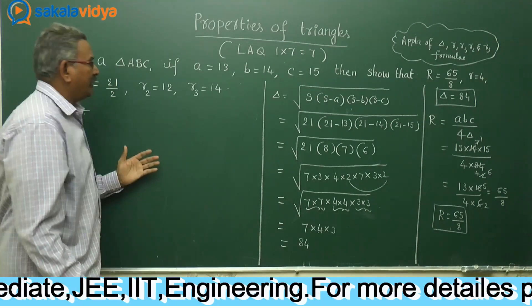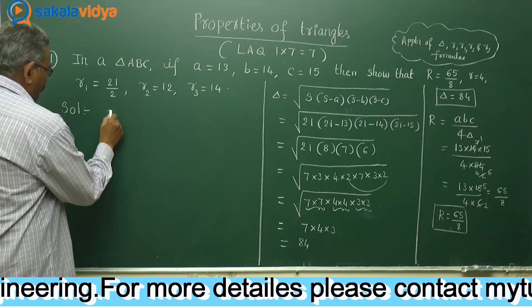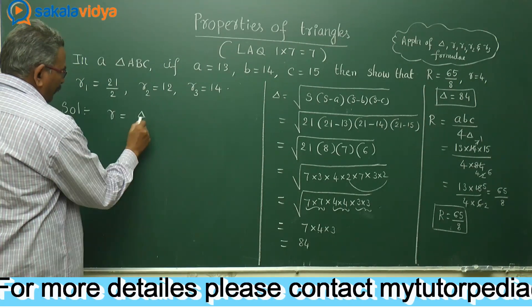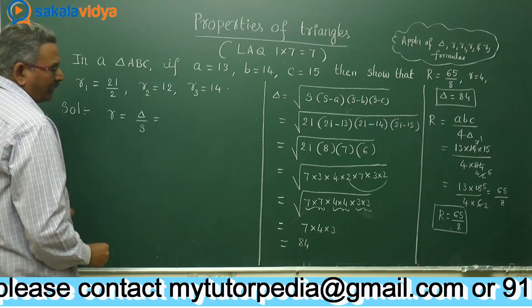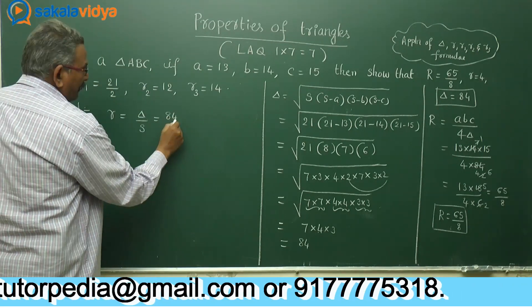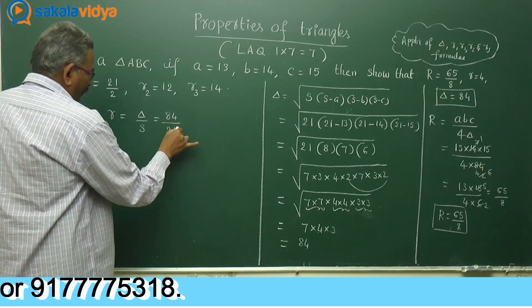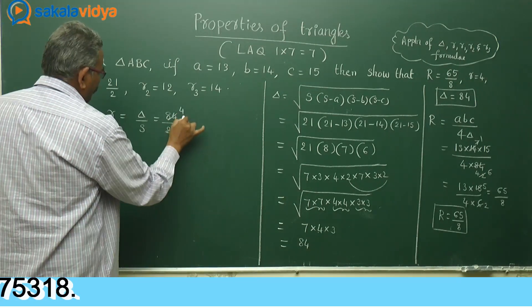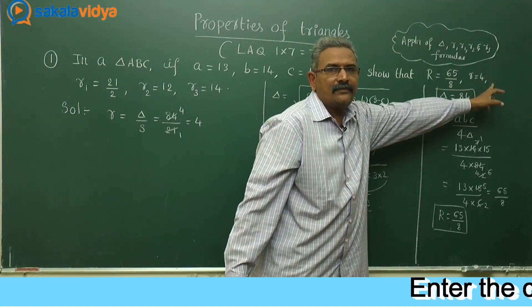Now we have to find out the small r. Small r is very simple. Small r is equal to delta by S. Delta is actually 84, divided by S is 21. 21, 1, 24, 4. R value is 4, has been proved.